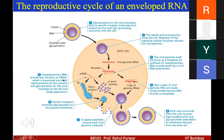The mRNA is translated into capsid proteins in the cytosol and glycoproteins for the viral envelope in the endoplasmic reticulum and Golgi apparatus. The capsid and RNA genome combine together, and vesicles transport envelope glycoproteins to the plasma membrane. A capsid assembles around each viral genome, and each new virus buds from the cell enveloped with viral glycoproteins embedded in the membrane derived from the host cell's plasma membrane.